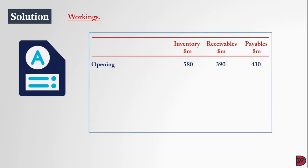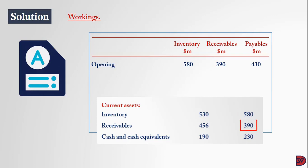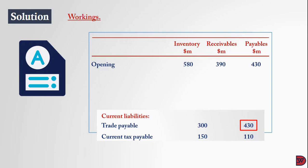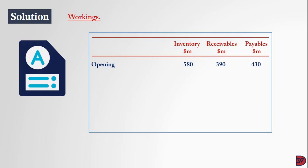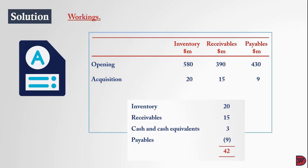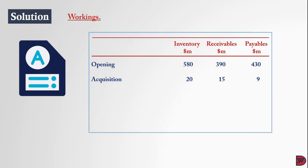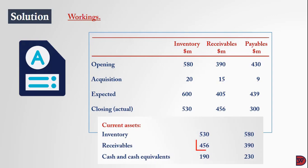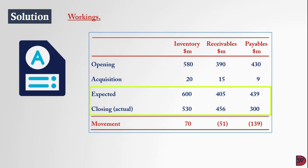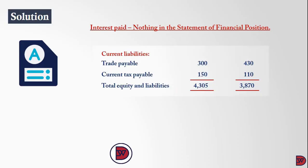For working capital movements: the opening balances were inventory 580 million, receivables 390 million, and payables 430 million. The acquisition of the subsidiary added 20 million to inventory, 15 million to receivables, and 9 million to payables. This gives expected figures of 600 million for inventory, 405 million for receivables, and 439 million for payables. Comparing to closing balances of 530 million inventory, 456 million receivables, and 300 million payables gives a decrease in inventory of 70 million (inflow), an increase in receivables of 51 million (outflow), and a decrease in payables of 139 million (outflow).